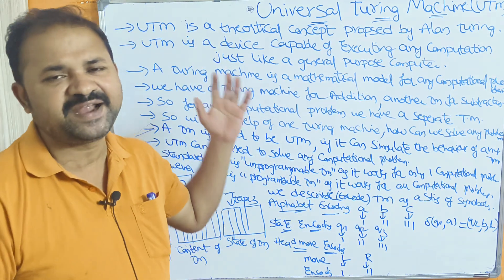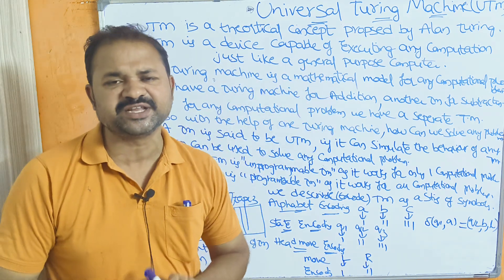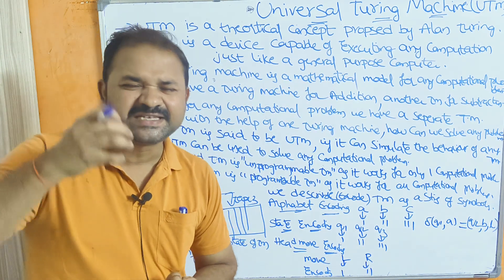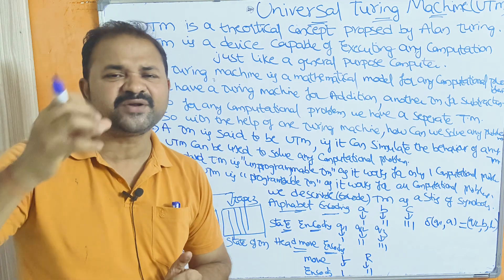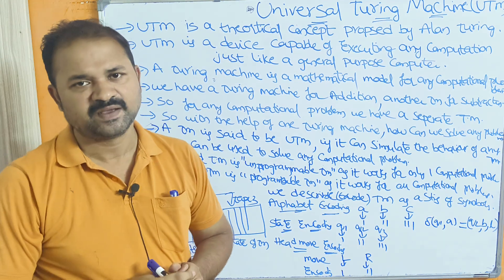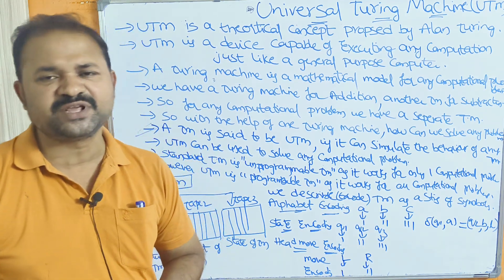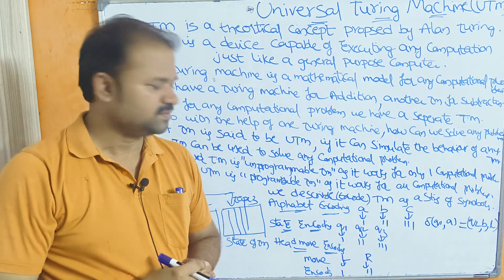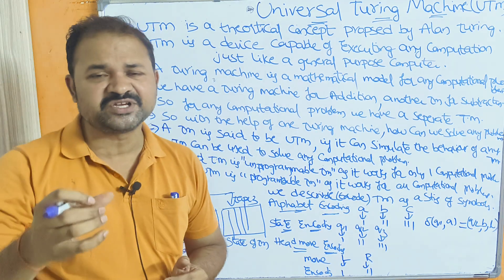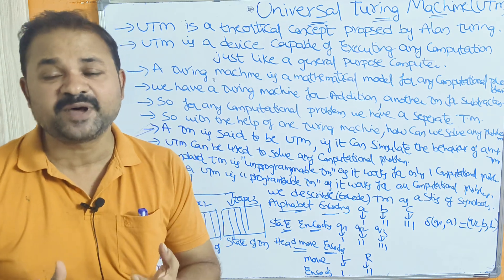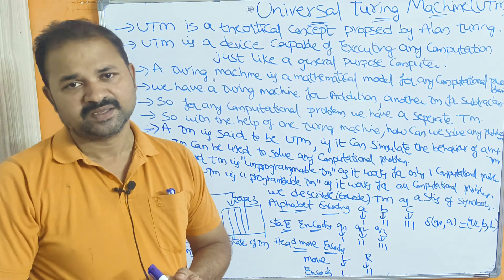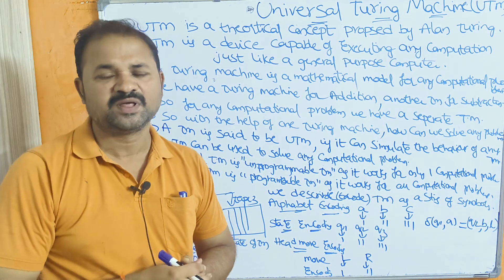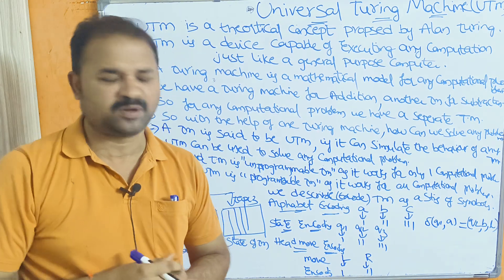The advantage of the Universal Turing Machine is that it can simulate the behavior of any Turing Machine, so we can perform any operation with it. Universal Turing Machine is just like a general purpose computer — with the help of the UTM we can solve any computational problem.